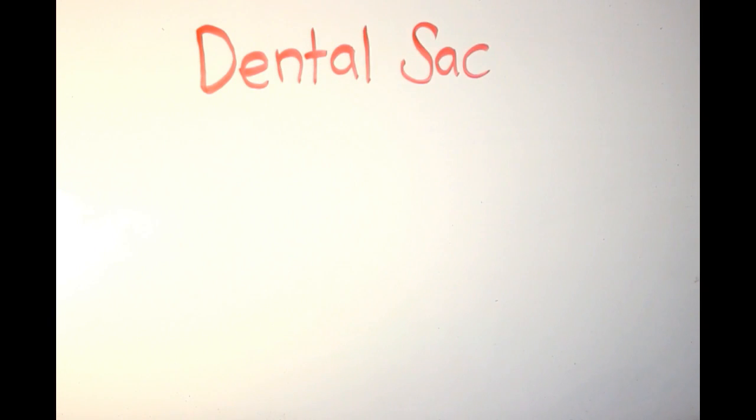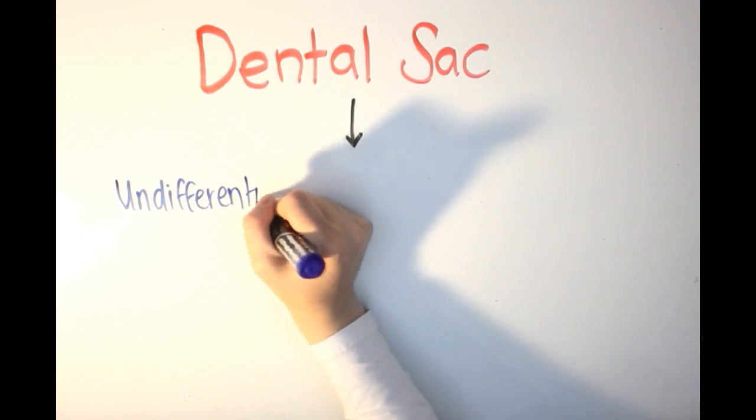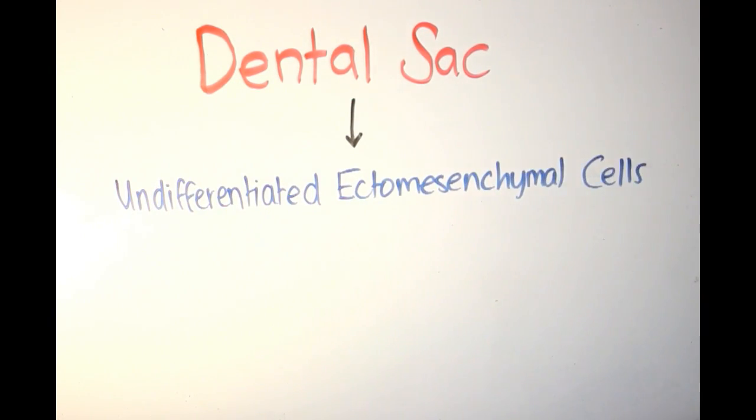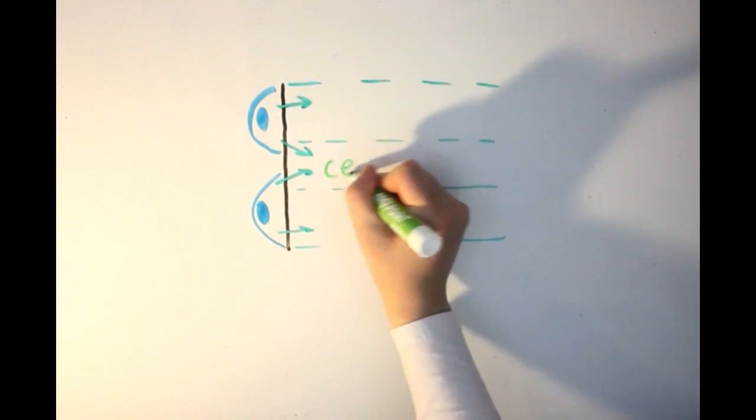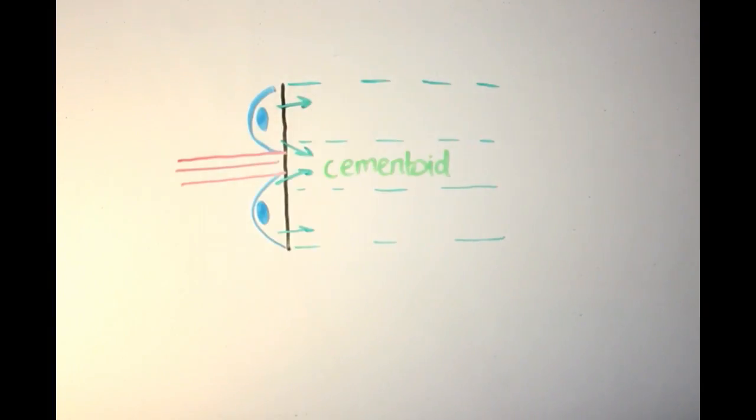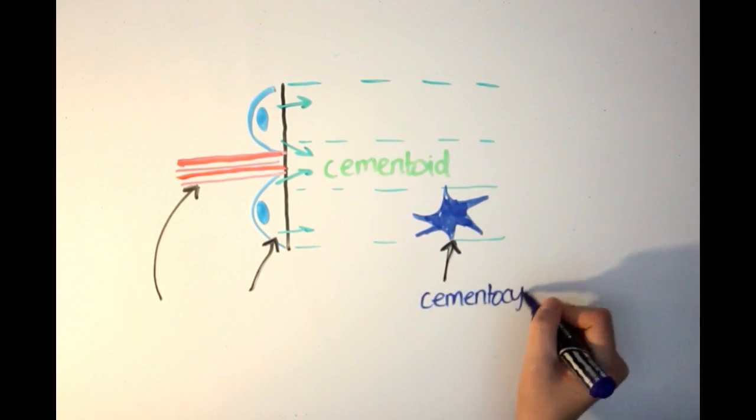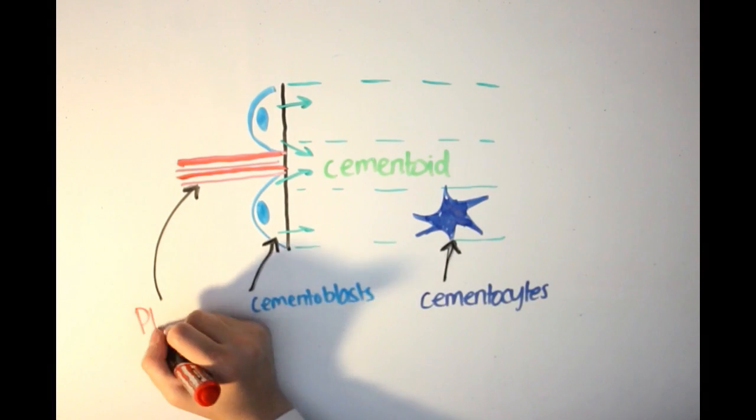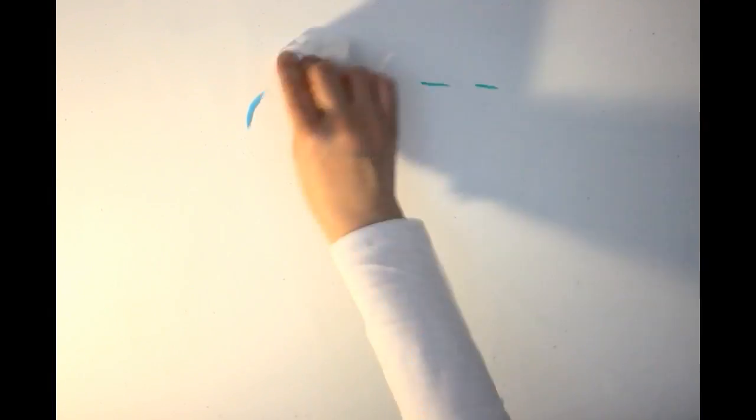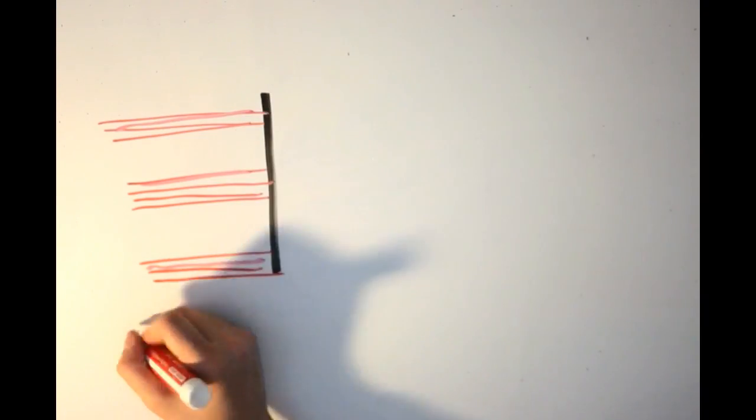Cementoblasts originate from the undifferentiated ectomesenchymal cells of the dental sac, arising once the dentin is exposed to the surrounding tissues. Cementoblasts are found on the surface of the forming cementum and create the matrix of cementum, also known as cementoid. If they get trapped in this matrix, they form cementocytes. Cementoblasts are nourished by the blood vessels of periodontal ligaments.